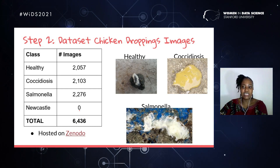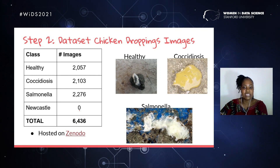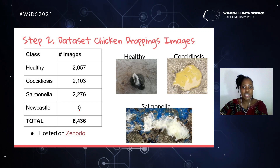When a chicken is infected with coccidiosis, the chicken dropping is predominantly brown in color. For Salmonella, it is white and loose — predominantly white and loose. And for a healthy chicken, the dropping is solid.